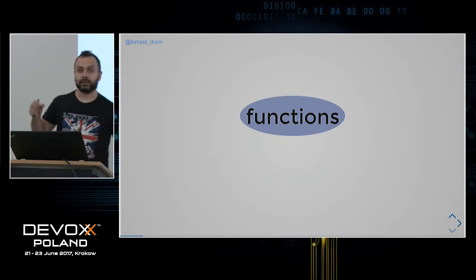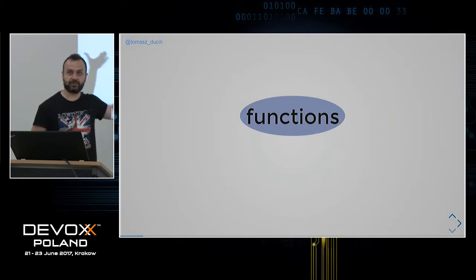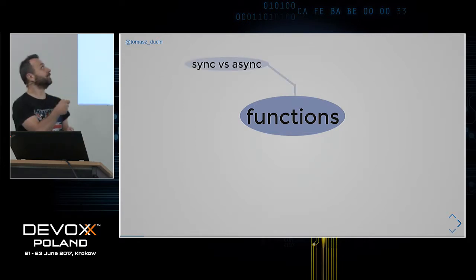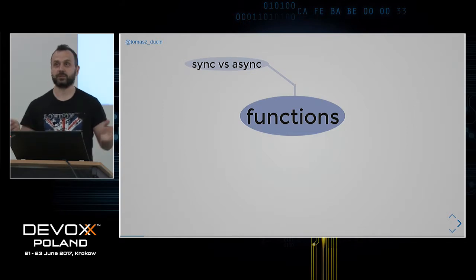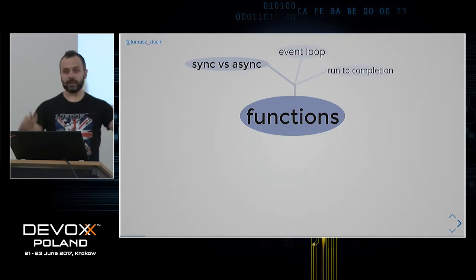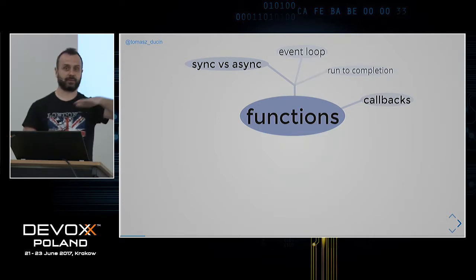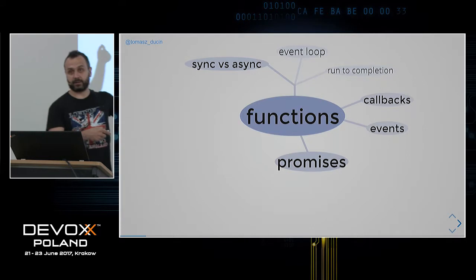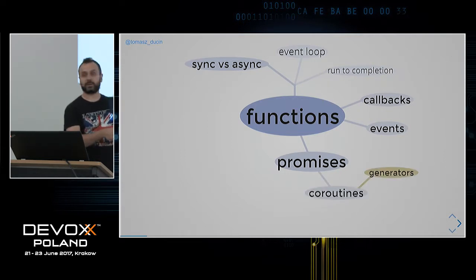In JavaScript, a function is the most important thing — unlike Java where a class is central, in JavaScript function execution and function scope are what matter most. We need to know which functions execute synchronously and which asynchronously. Then we have the event loop and run-to-completion execution model, then callbacks with no real architecture, then event-driven design, and finally the promise pattern — a single operation to be completed in the future.